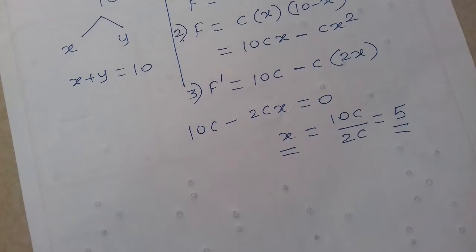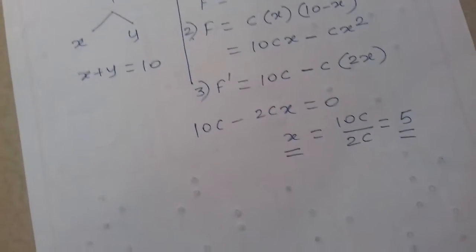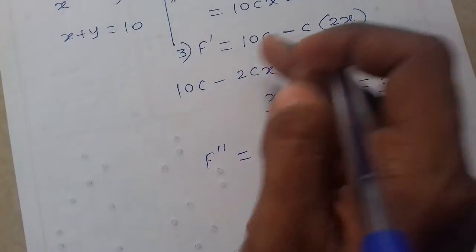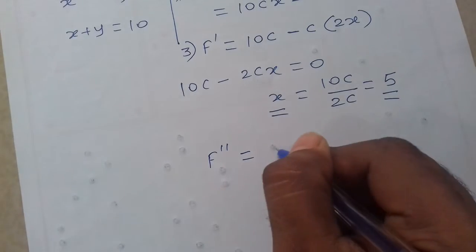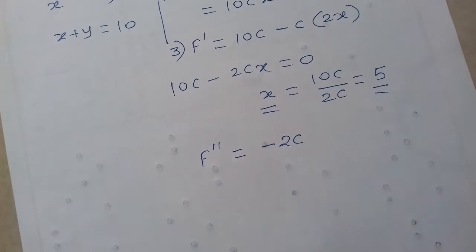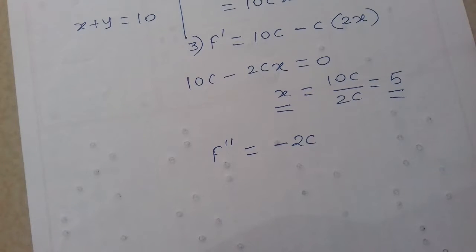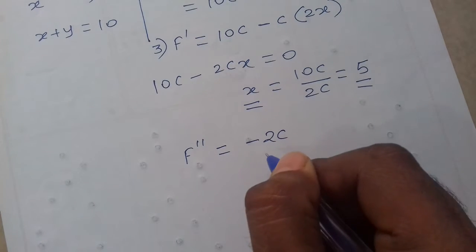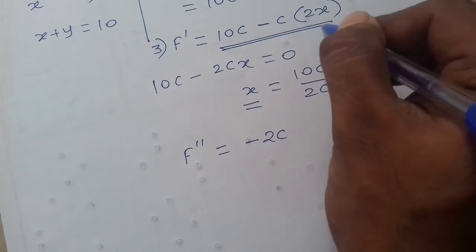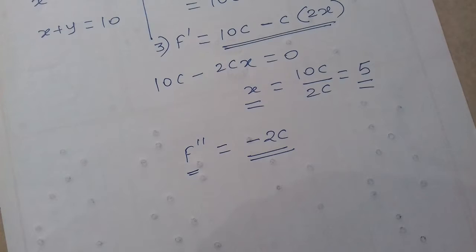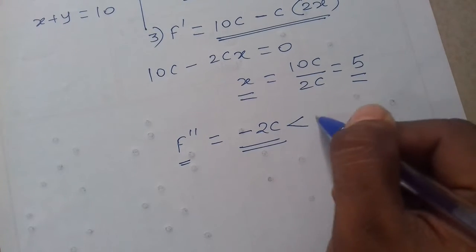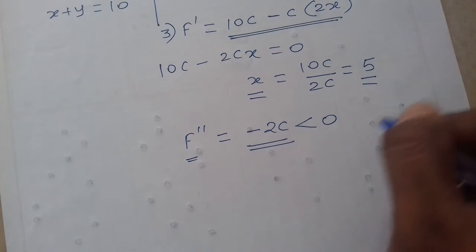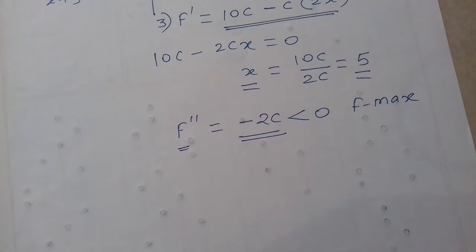Second derivative - derivative ka derivative - f double dash is what? 10C ka derivative is zero because it is constant. Minus 2C is constant, and derivative of x is 1. Therefore double derivative ae ga minus 2C. So f double dash, the second derivative, is less than zero - negative ae gaya. Matlab function is maximum.